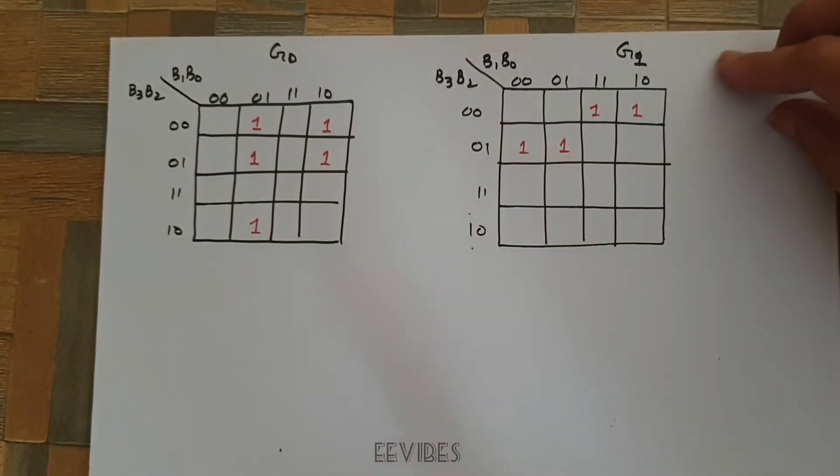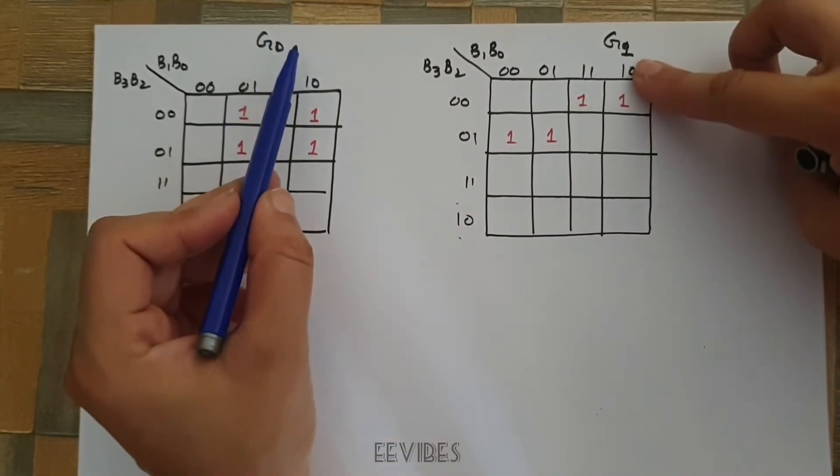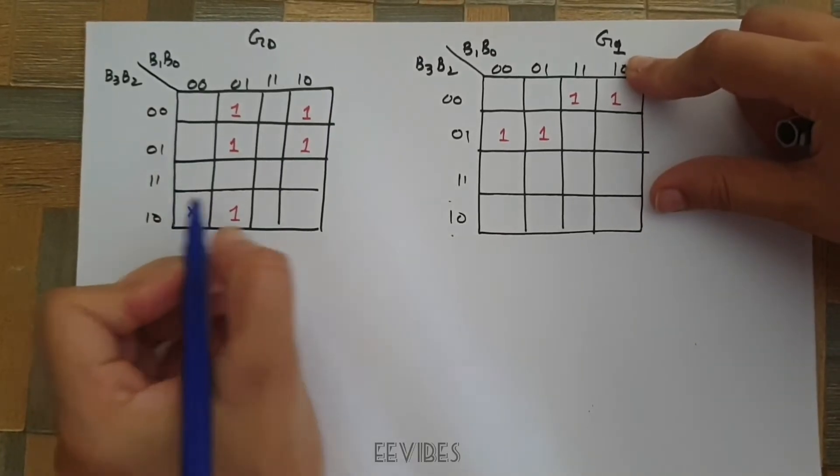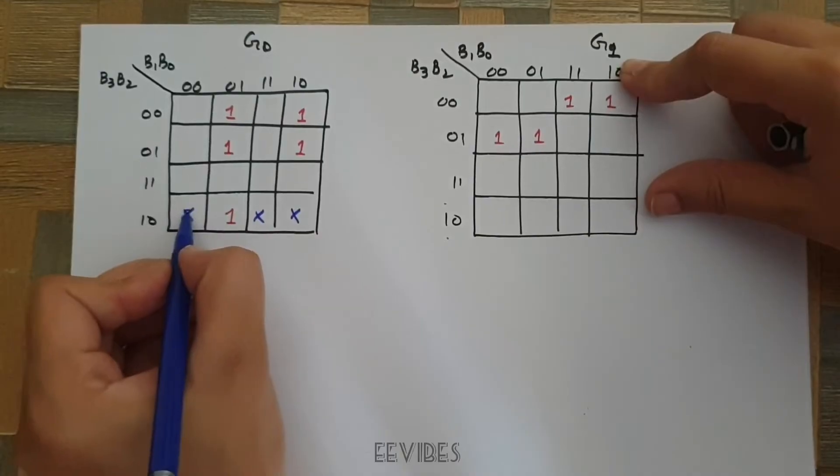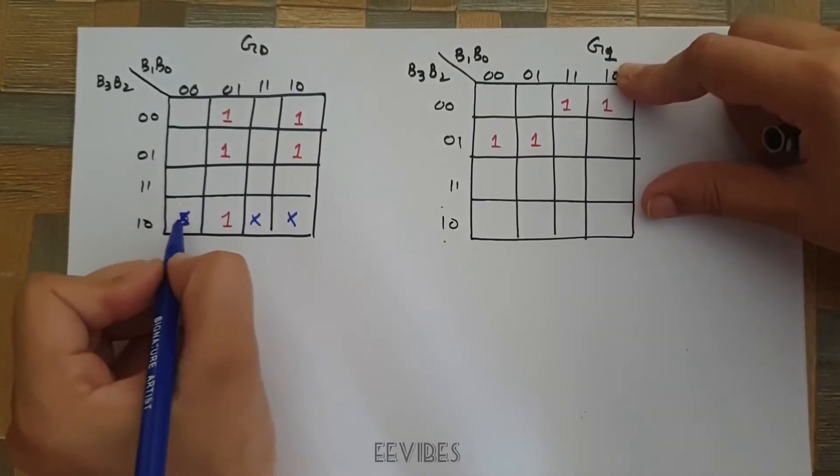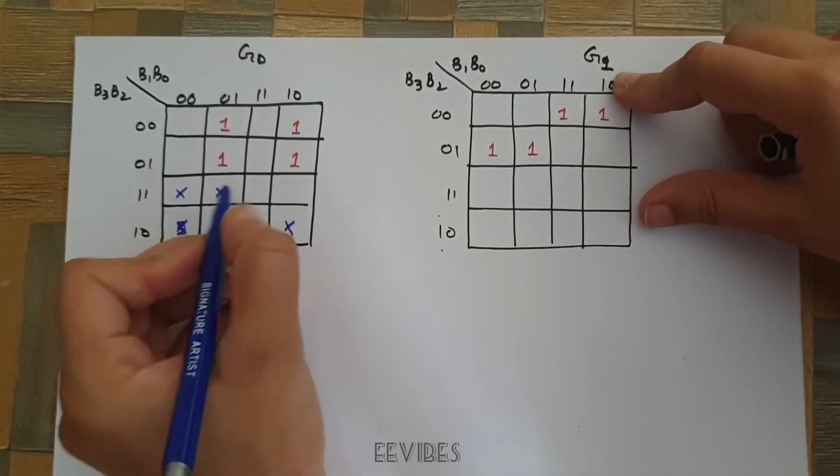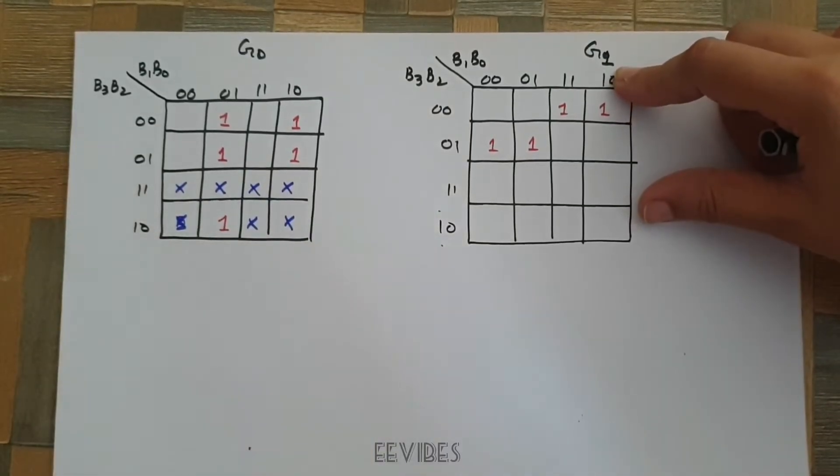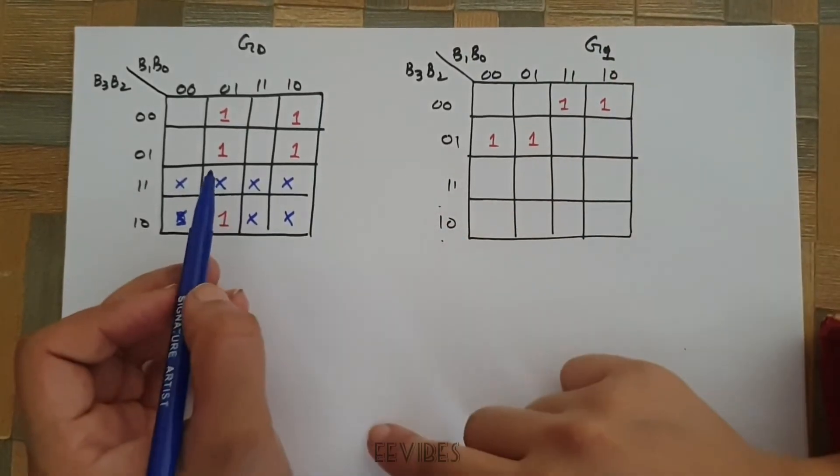So, this is the simplified expression for the second bit of the Gray code. The next step is to derive the function for G0 and G1. I have already placed 1s in the boxes and the only thing that was left to mark the don't care conditions. Here you will not mark the don't care conditions because the 8th min term was equal to 0.